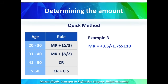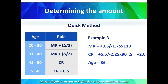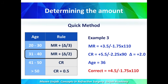Another example: a patient has manifest refraction of plus 3.5, minus 1.75 at 110, and cycloplegic refraction of plus 5.5, minus 2.25 at 90. Delta (the difference between spheres) is plus 2. The patient's age is 36 years. So we are going to correct plus 4.5, minus 1.75 at 110.